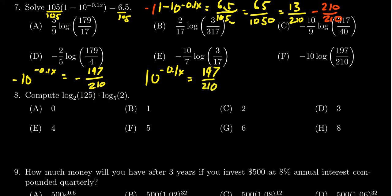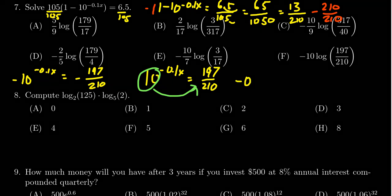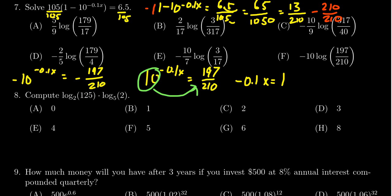At this moment, how do you get rid of the base 10? Well, you get rid of the base 10 by taking the logarithm base 10. So we move the 10 to the right-hand side, it becomes a logarithm. Just like over here, multiplication by 105 became division by 105 on the other side. Positive 1 became negative 1 on the right-hand side. So when you move it to the other side of the equation, you always take the inverse operation. So we end up with negative 0.1x is equal to log of 197 over 210.